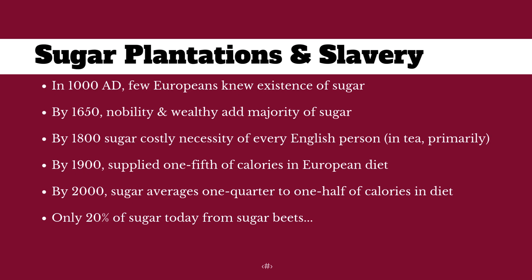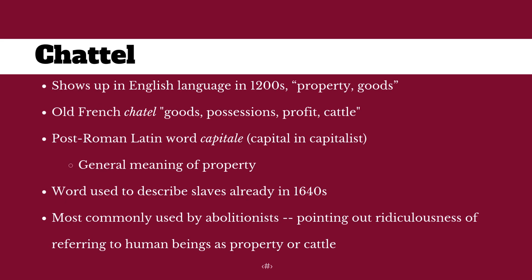So let's talk about chattel. Chattel shows up in the English language first in the 1200s, and it doesn't mean slave — it means goods, cattle, like cows and horses and sheep and pigs, things that you own. It comes from an Old French word meaning cattle, profit, things you own, things you make money off of — farm equipment, animals. It's related to the same root that gives us 'capital' and 'capitalist.' When the word is used to describe slaves in English in the 1640s, from the very beginning it means African slaves on plantations — it is created to mean they are animals, not people. They're like livestock: you name your horse, your pig, your cow, of course you'll name your slaves too, but they are one and the same.